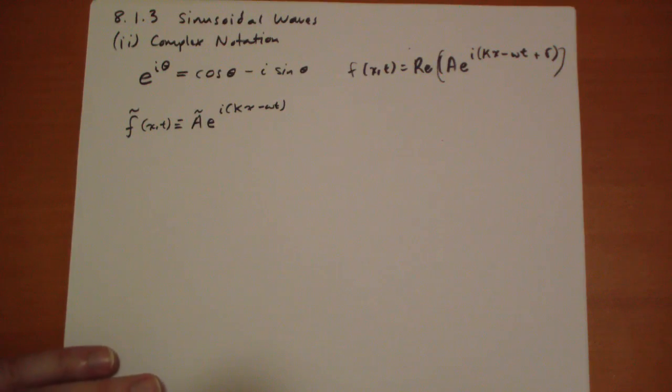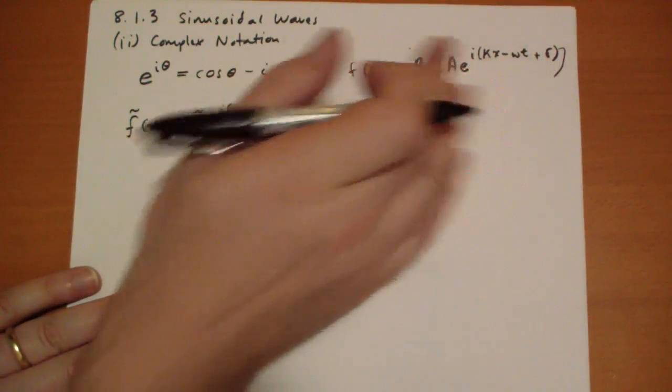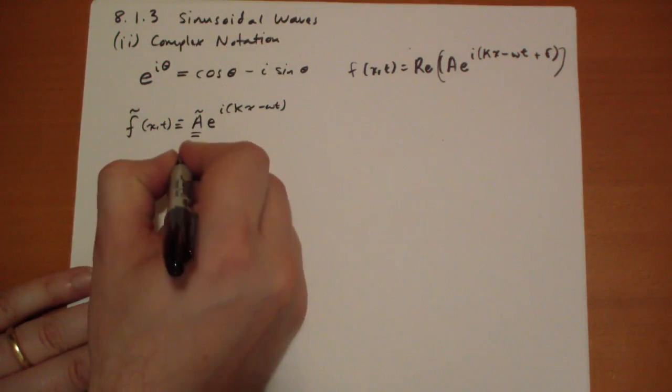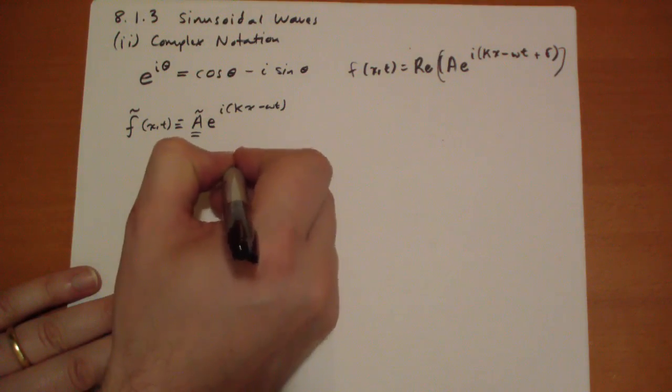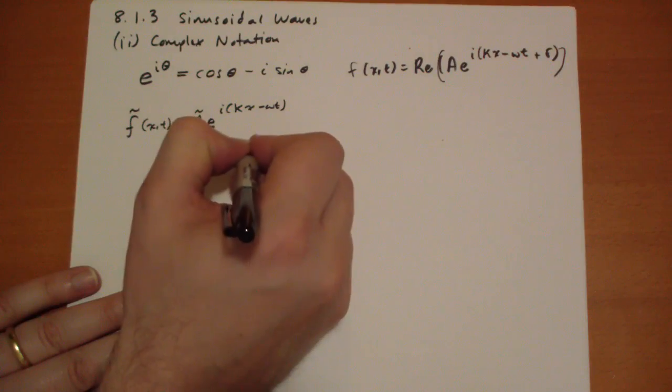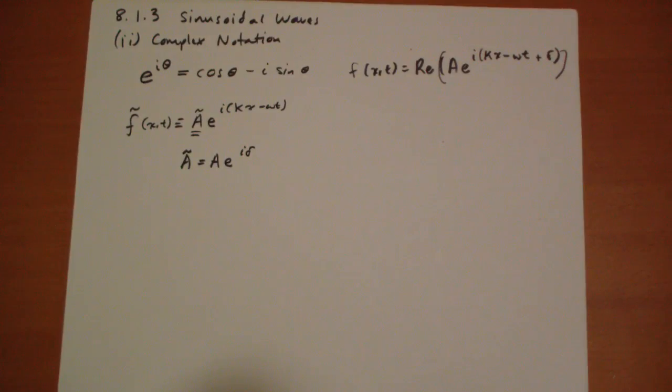the complex amplitude, this guy, can absorb this part right here. Right? So your A curly bit is equal to your actual amplitude times E to the i delta. Dude. I'm not good at writing the deltas the way you're supposed to write them yet.